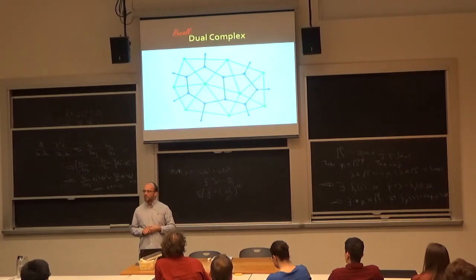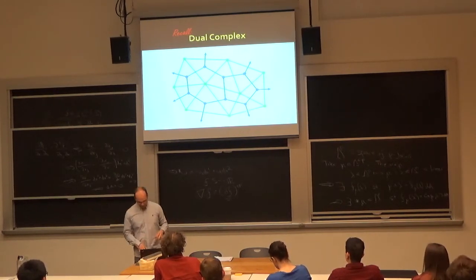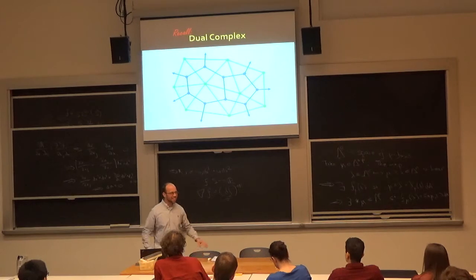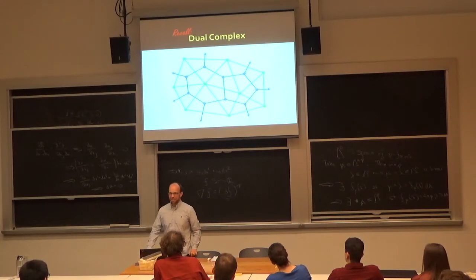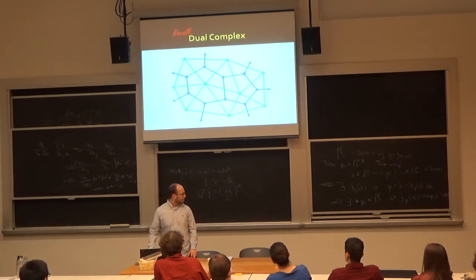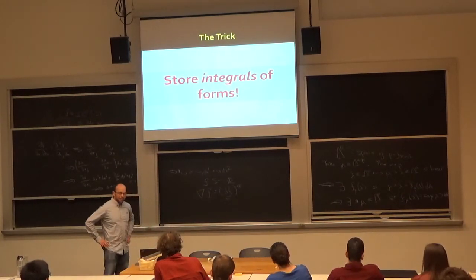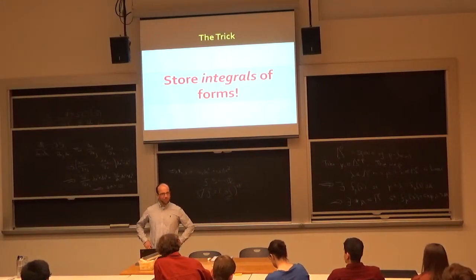This starts to look familiar in the language of exterior calculus: every k-dimensional object maps to an n-k-dimensional object. The trick of discrete exterior calculus is that we don't store differential forms directly — we store their integrals over different elements of the triangle mesh. This is similar to how we defined curvature: the turning angle at a vertex is not curvature itself, but the integral of curvature over two adjacent line segments.